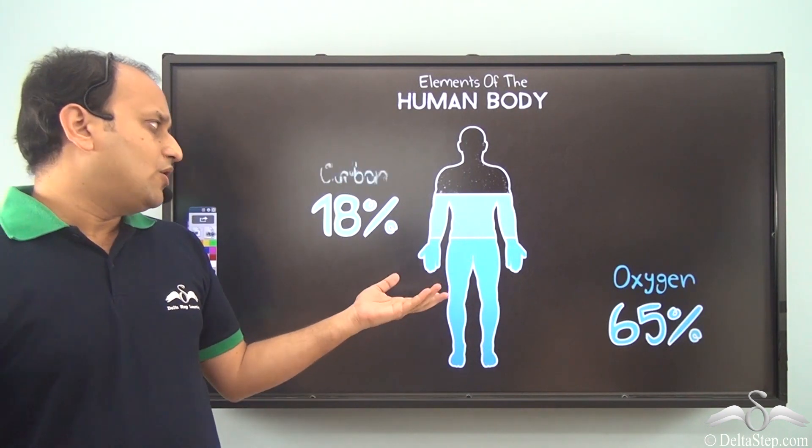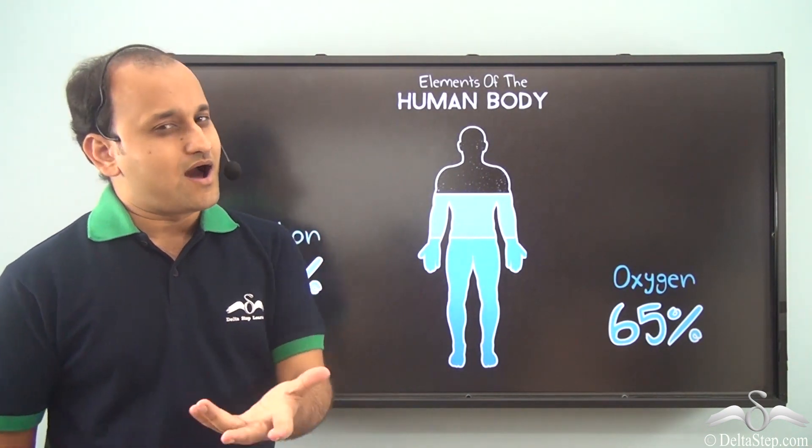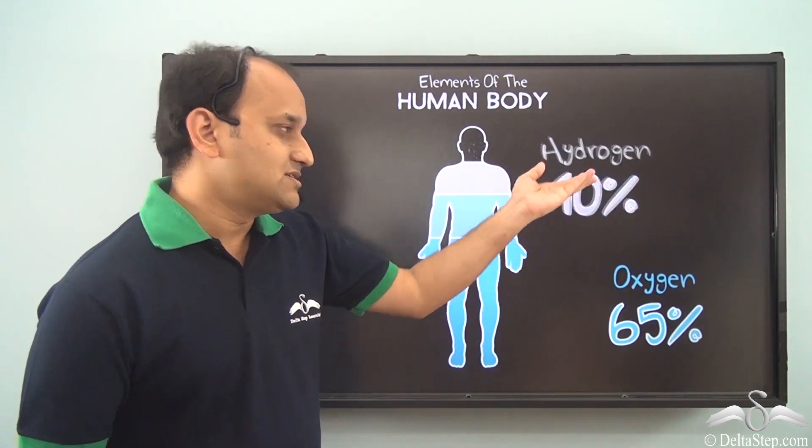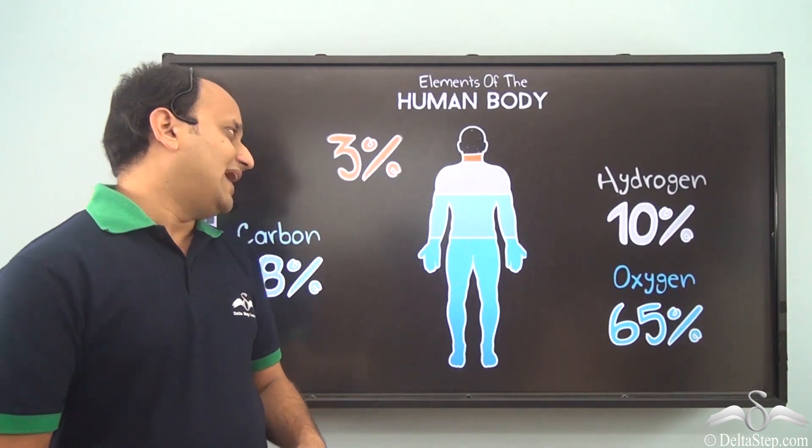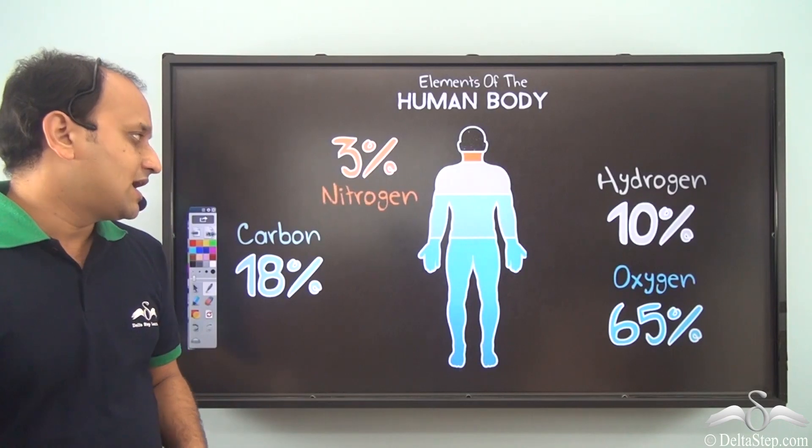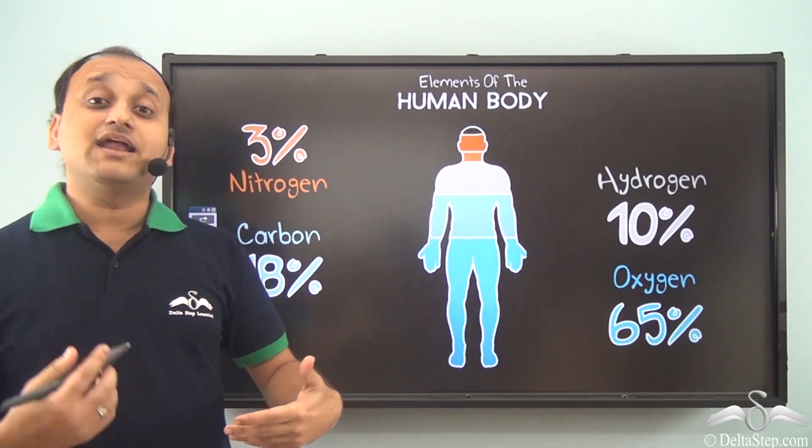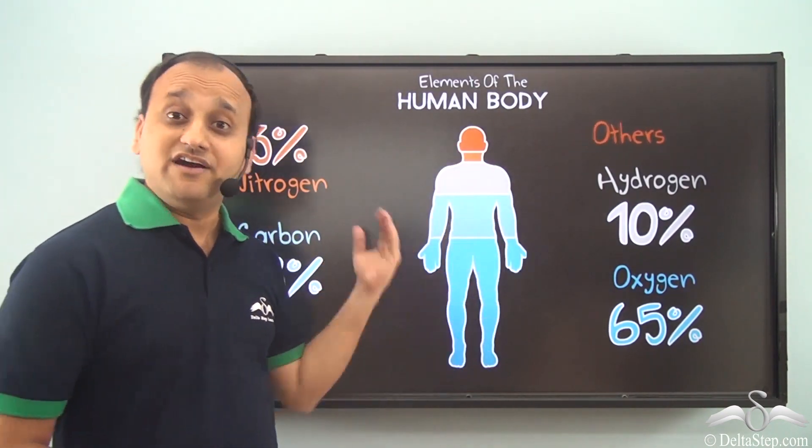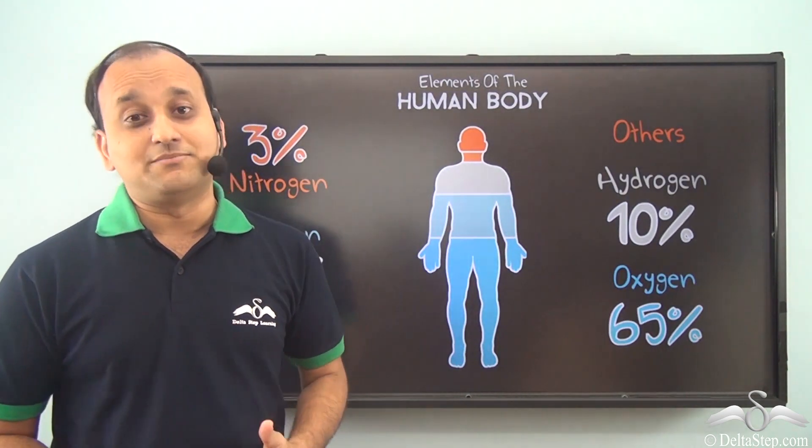Now what about the other part? Well, eighteen percent is carbon, again a chemical element. Then we have ten percent hydrogen, a chemical element. Then three percent nitrogen. And apart from that, there are many other chemical elements that make up our body. So our body is made up of a number of chemical elements.